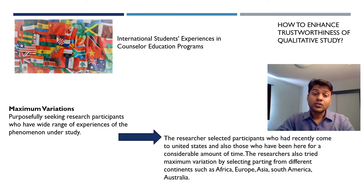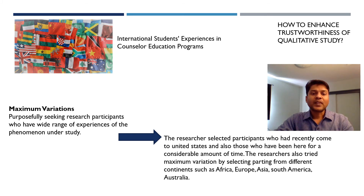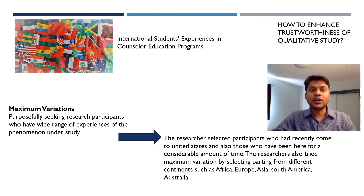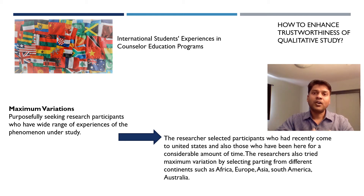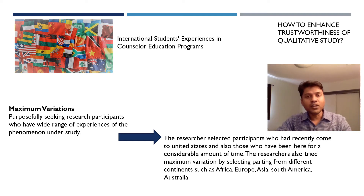I can also select participants based on age — for example, one participant who is 25 versus someone older — creating variation in age. I can also create variation in terms of how long they have stayed in the United States, selecting some who have spent one year and others who have spent three or four years. Having this variation helps the researcher create a very rich description of the phenomenon, and maximum variation is a commonly used method when qualitative researchers select participants.